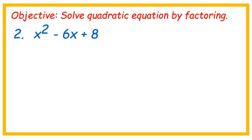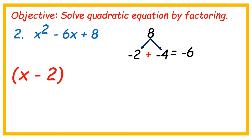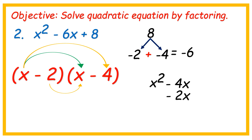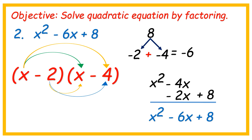Number 2: x squared minus 6x plus 8. Again, we're going to think of factors — when we multiply, the answer is positive 8, but when we add, the answer is negative 6. We have negative 2 times negative 4: the answer is positive 8, and when we add them, the answer is negative 6. We got it! The factors are x minus 2 and x minus 4. Let's check it using the FOIL method: x times x is x squared; x times negative 4 is negative 4x; negative 2 times x is negative 2x; negative 2 times negative 4 is positive 8. x squared minus 6x plus 8 — we got it!